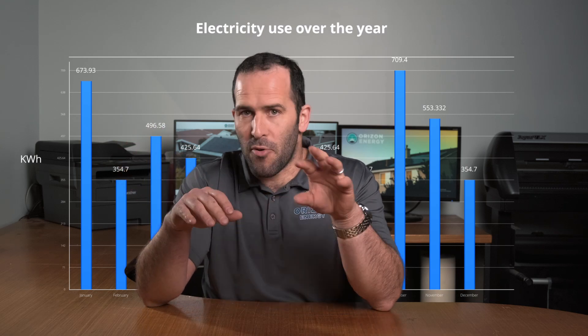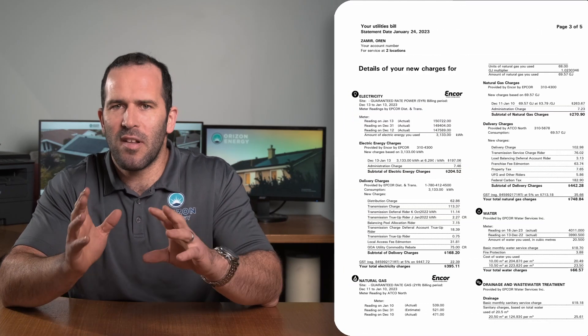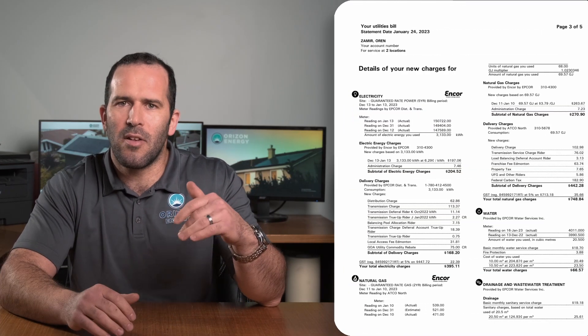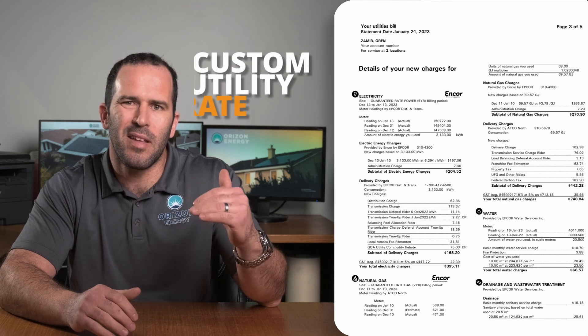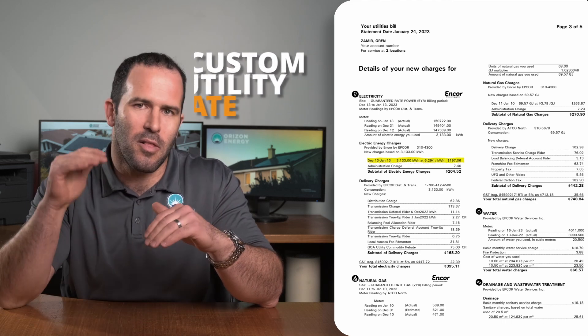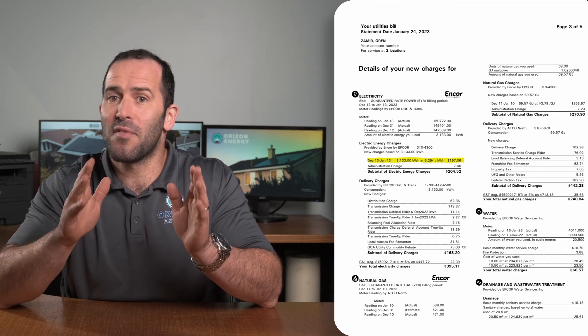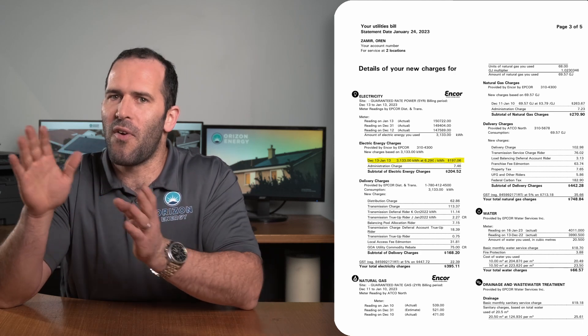As professionals, we actually export the data out of this chart and input it into our innovative software. The second page of your utility bill allows us to look at what we call a custom utility rate. You might have your utility bill locked at $0.07 per kilowatt, and you might have that locked for five years.